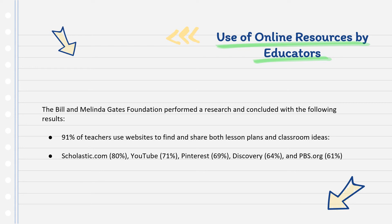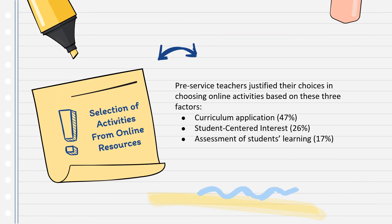Interestingly, education-related items are the second most highly searched resource on Pinterest. During the study, pre-service teachers stated they chose online activities for curriculum application, student-centered interest, and assessment of student learning. However, research conducted by Sawyer and Meyer concluded that pre-service teachers tended to determine the effectiveness of an online activity based on how many pins it had on Pinterest, instead of evaluating the content themselves — and ultimately, the more popular an activity is, whether positive or negative, the more sales it generates.